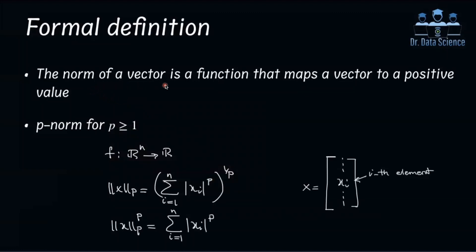The norm of a vector is actually a function that maps a vector to a positive value. If you look at linear algebra textbooks, there are certain conditions that have to be met in order to have a valid function or valid norm for vectors. But the most common form that you really need for machine learning is known as P-norm, where P is greater than or equal to one.